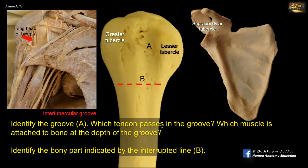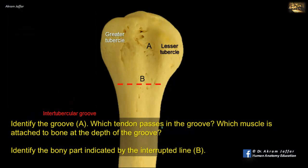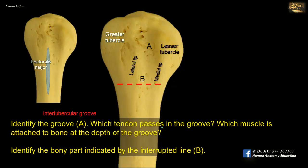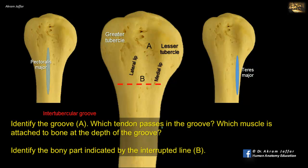The tendon leaves the capsule of the shoulder joint under cover of the transverse humeral ligament, which bridges the upper part of the groove. The groove has two lips, medial and lateral, which are downward continuations of the lesser and greater tubercles respectively. The lateral lip receives the attachment of pectoralis major, the medial lip receives teres major, and the depth of the groove receives the ribbon-like tendon of latissimus dorsi.